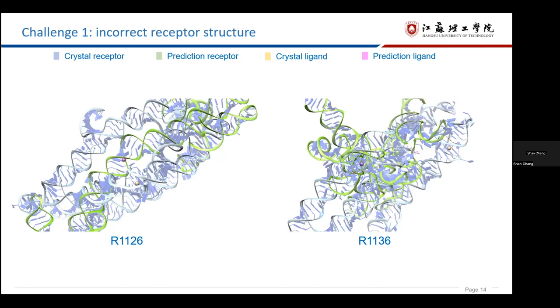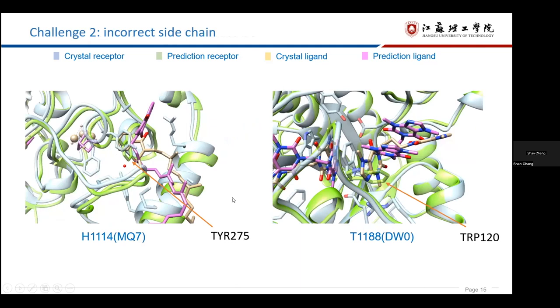Then, to summarize the challenges of ligand binding prediction. The first is incorrect receptor structure, which has a greater impact. We use the structures provided by CASP for RNA targets. However, some of them, the RMSDs of receptor are too large. So the ligand could not be predicted correctly. Because of the unbound docking, the side chain orientation of predicted protein are also different with the crystal structure, which will have an impact on the ligands, especially for those with the pi-pi interactions. You can see.